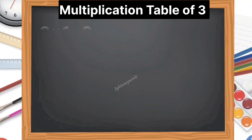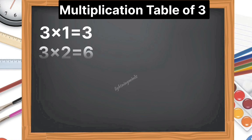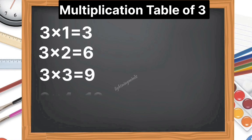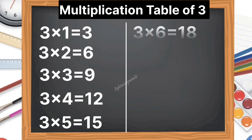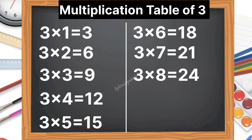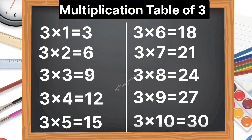Multiplication table of 3. 3 1s are 3, 3 2s are 6, 3 3s are 9, 3 4s are 12, 3 5s are 15, 3 6s are 18, 3 7s are 21, 3 8s are 24, 3 9s are 27, 3 10s are 30.